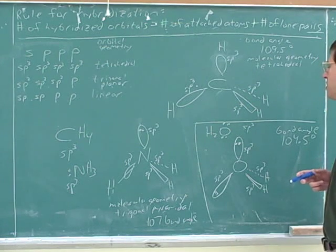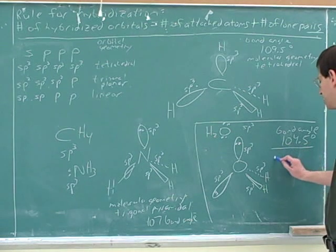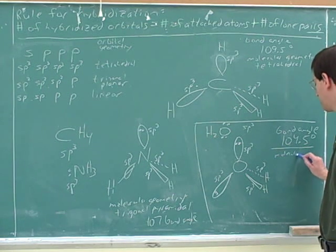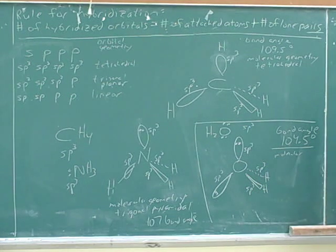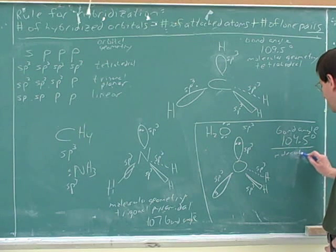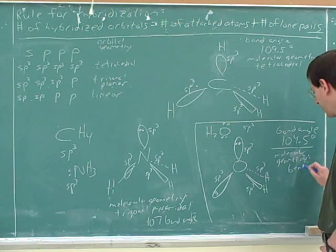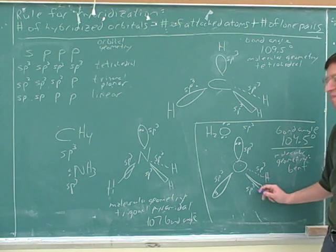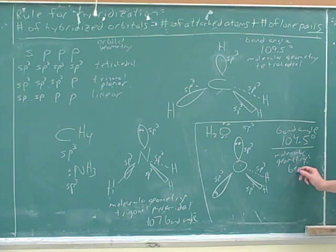And again, even though the orbital geometry is tetrahedral, that's not the molecular geometry, because the molecular geometry just depends on where the atoms are. And there's only three atoms here. So we need a new name for this molecular geometry. Bent. Yeah. Not a very elegant name, but it's logical, because the three atoms form a bent set of three atoms. Sometimes this is called angular, so angular or bent.